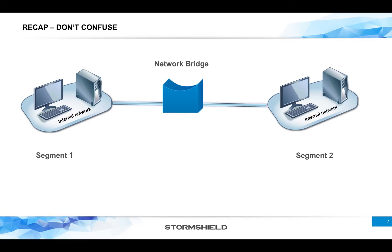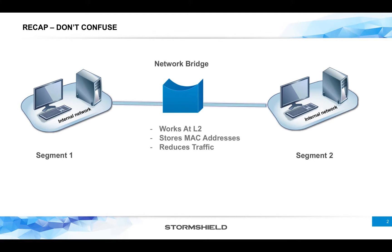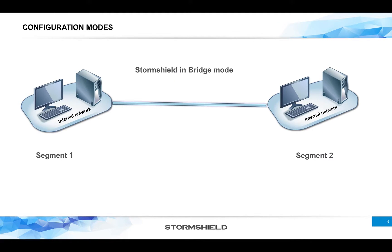A network bridge is a very simple device that works at Layer 2. It splits a LAN into two segments, and these two segments can communicate internally and also with each other through the bridge. The bridge stores the MAC addresses of both segments and as a result reduces traffic — it sees any packet going to the other segment and allows it to pass based on the destination MAC address.